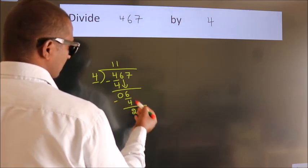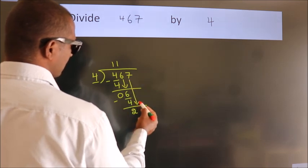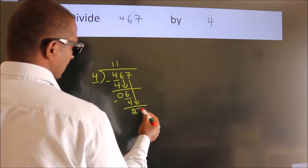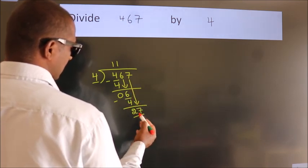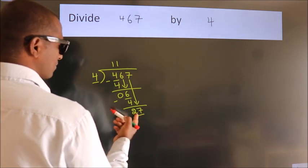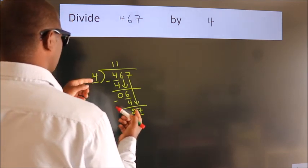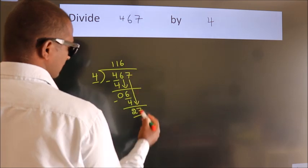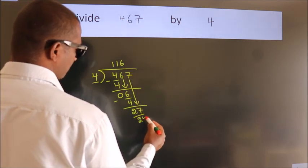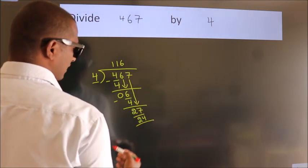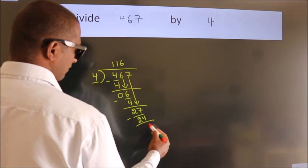After this, bring down the beside number. So 7 down. So 27. A number close to 27 in 4 table is 4, 6, 24. Now we subtract. We get 3.